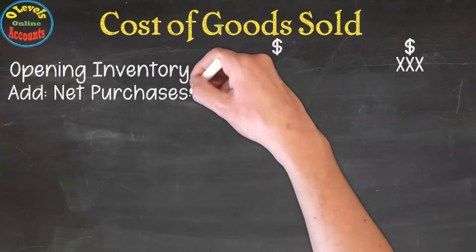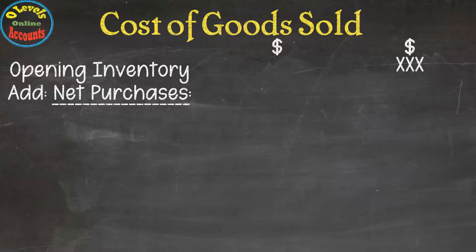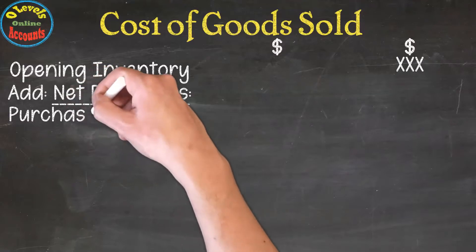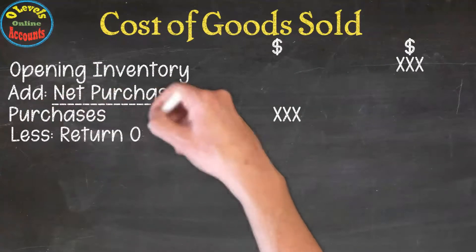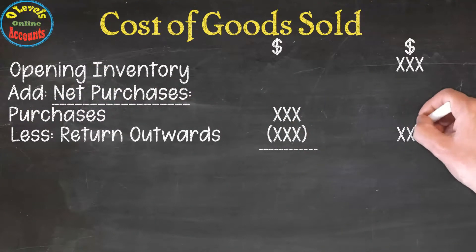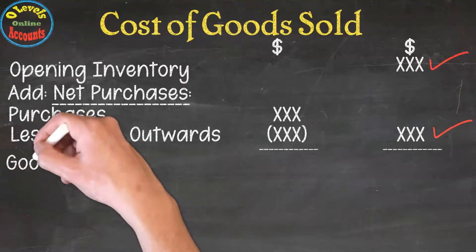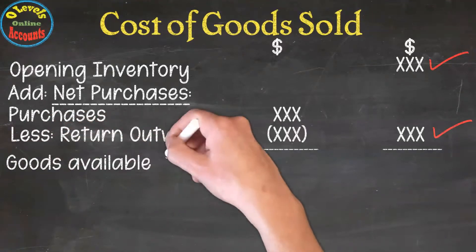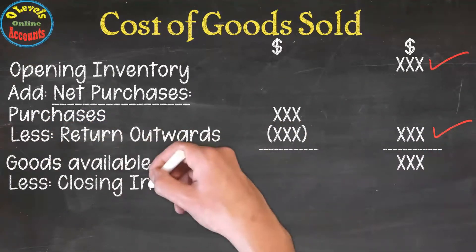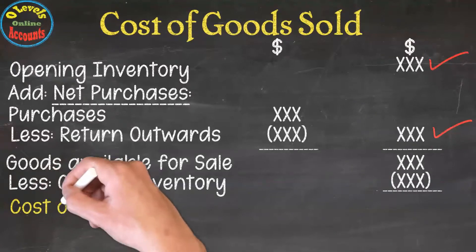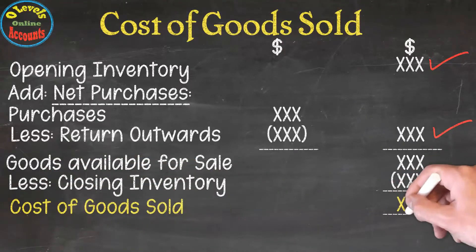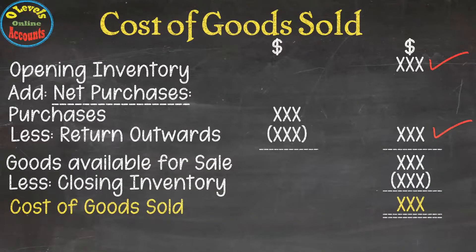We put an underline and colon at the end, which in accounting means this item is explained below. So the purchases figure goes in the first column, less return outwards, to get net purchases in the second column. After adding opening inventory and net purchases, we get the goods available for sale. Then less closing inventory gives the final result: cost of goods sold.